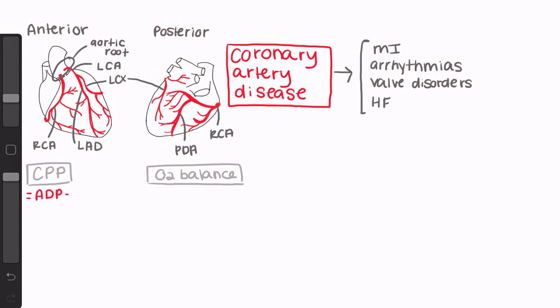Coronary perfusion pressure for the left ventricle is usually calculated by taking the difference between aortic diastolic pressure and left ventricular end-diastolic pressure. For us, that will mostly be in terms of controlling blood pressure and preload. Per the equation, a decrease in blood pressure or an increase in preload can severely decrease coronary perfusion pressure.